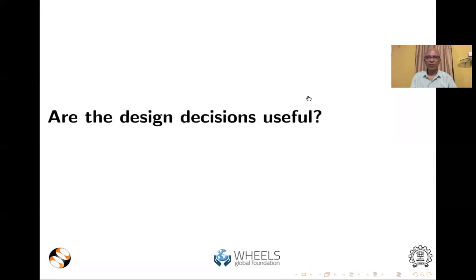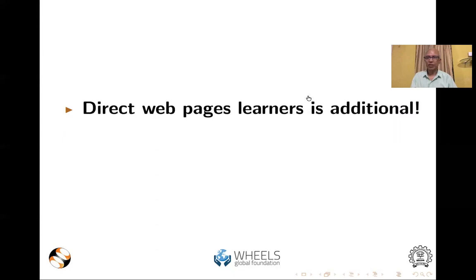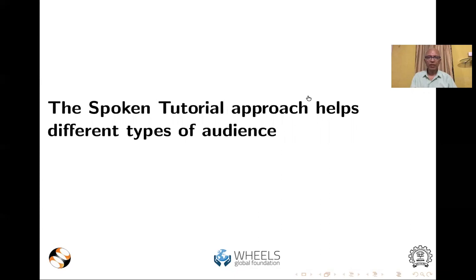Are the design decisions useful? We could train 6 million students in 7–8 years and 200,000 teachers. Direct web page learners are additional. We don't ask for registration or login.